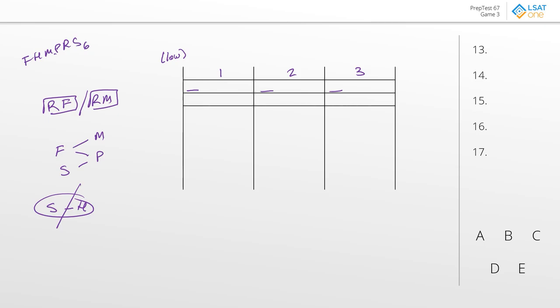We only have two major placements for S, and depending on what you do with S, it has implications — so that's a good avenue for exhaustion. Either S goes into aisle one, or S goes into aisle two. Let's label these: template A and template B.